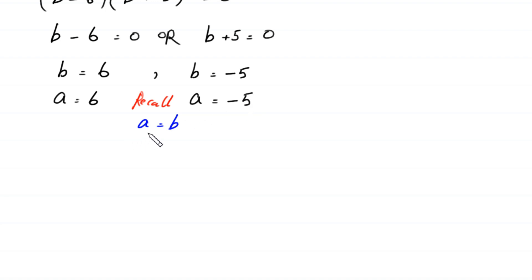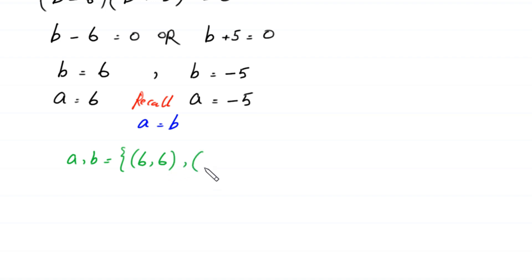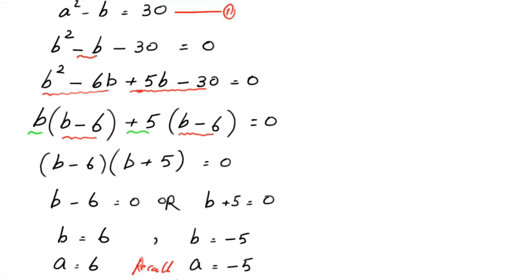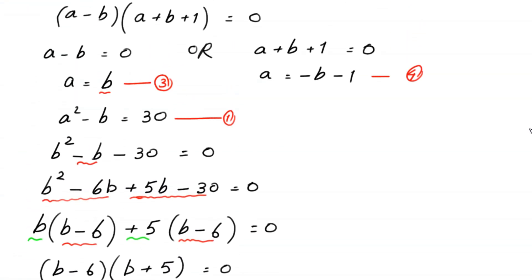So from equation 3 we get two pairs of solutions: (a, b) equals (6, 6) and (a, b) equals (negative 5, negative 5). Now we find the other two solutions from equation 4.